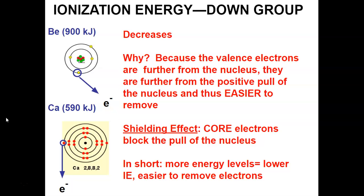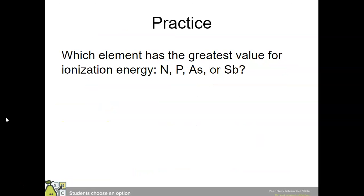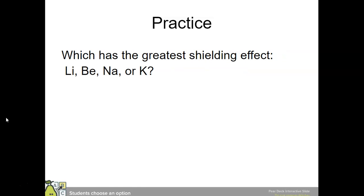In short, the more energy levels there are, the lower the ionization energy, and the easier it is to remove electrons. Looking at group 15 elements, nitrogen is at the top of the group, and ionization energy decreases down a group, so nitrogen has the greatest ionization energy. For shielding effect, potassium is correct because it has the most occupied energy levels. Lithium and beryllium are in the same period and have the same shielding effect; sodium has a slightly larger shielding effect, and potassium is the largest.